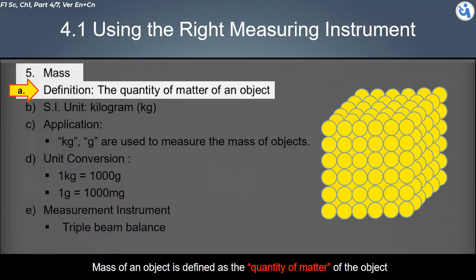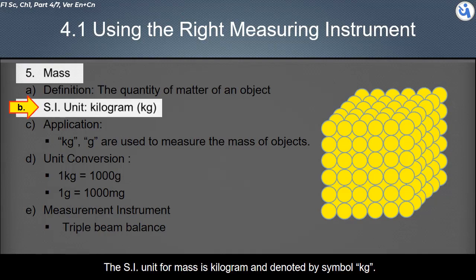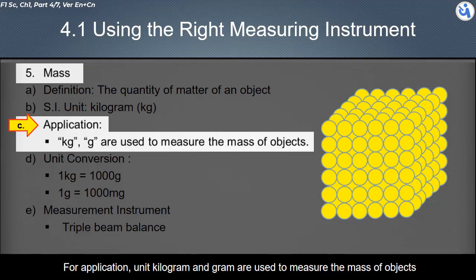This is about the mass of objects. Mass of an object is defined as the quantity of matter of the object. The SI unit for mass is kilogram, and denoted by symbol kg. For application, unit kilogram and gram are used to measure the mass of objects.